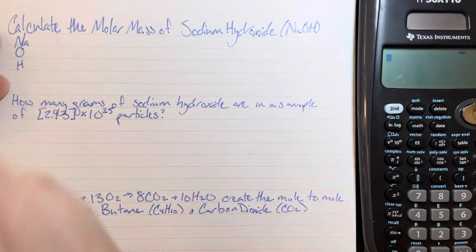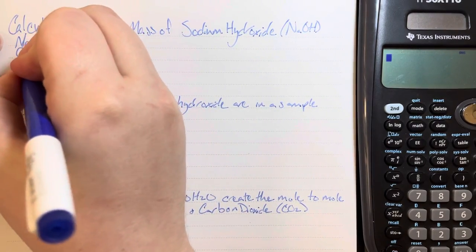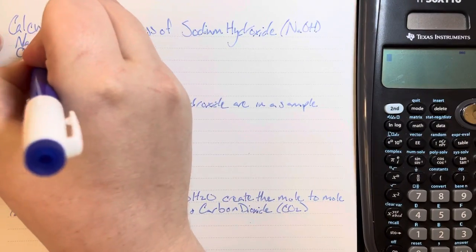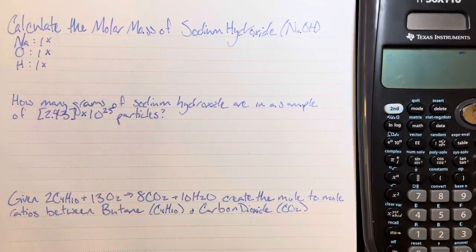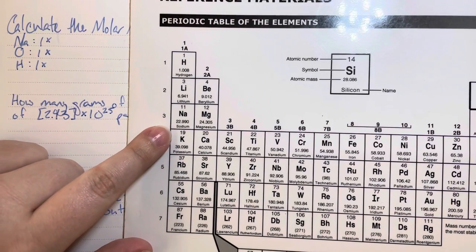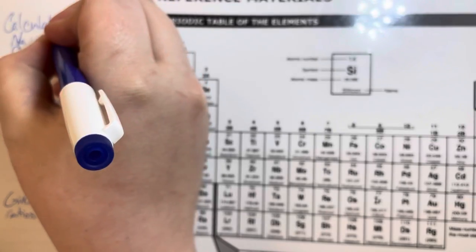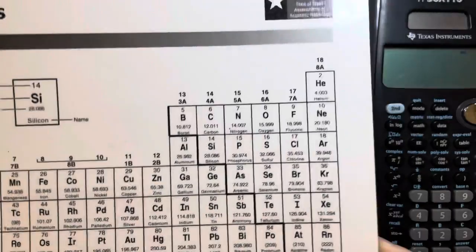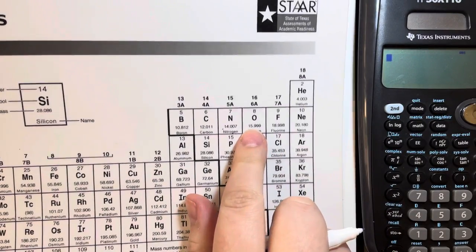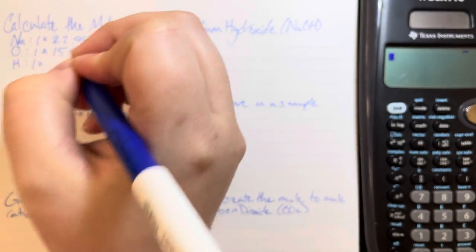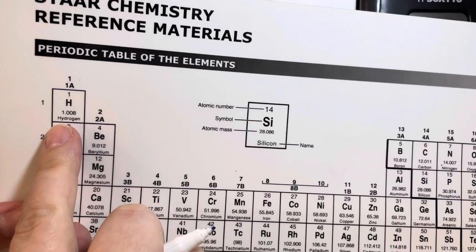Then you'll look to see what the subscripts are for how many of each element I have. Sodium, oxygen, and hydrogen all have invisible subscripts, so that means I have one of each. I'll go to the periodic table and find each element's mass. Sodium's mass is 22.990, oxygen's mass is 15.999, and hydrogen's mass is 1.008.